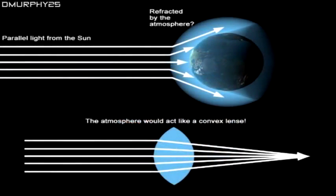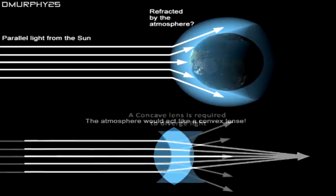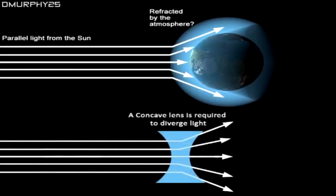But the Earth's atmosphere is apparently a convex curve. So that would act like a convex lens and converge the light, concentrate it like a magnifying glass. You'd need a concave lens to make light diverge as we observe.